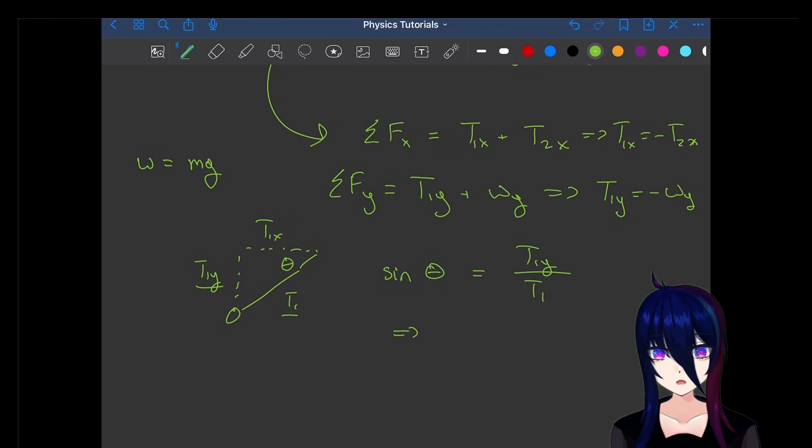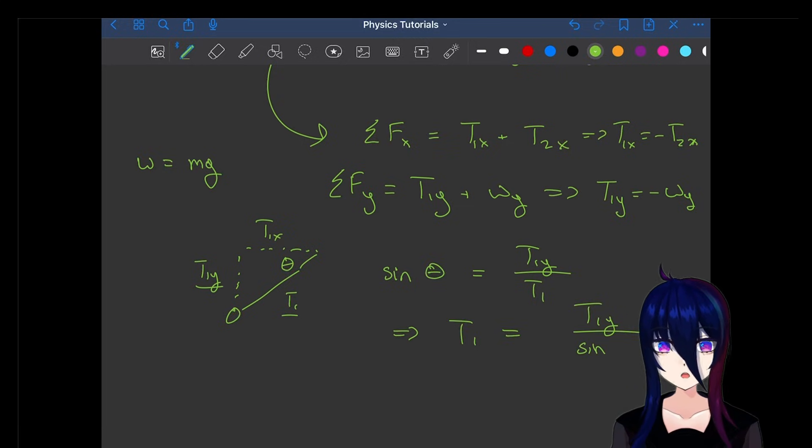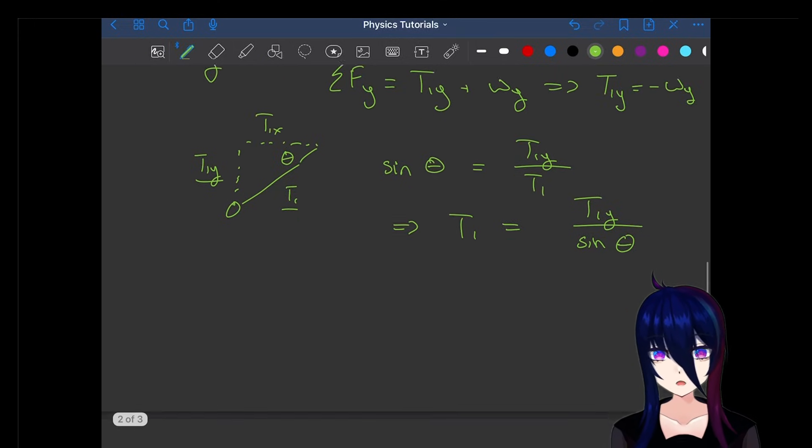Let's write that out and rearrange it. We have T1 is equal to the T1Y component over the sine of theta. We have all the pieces. Let's figure out what T1 is.